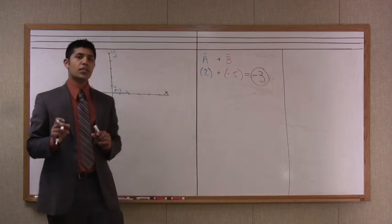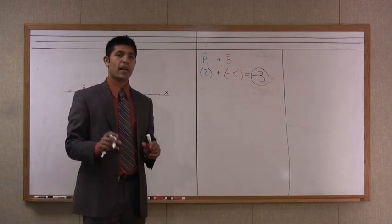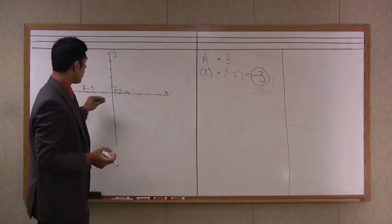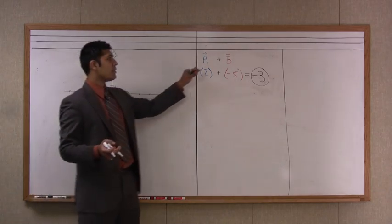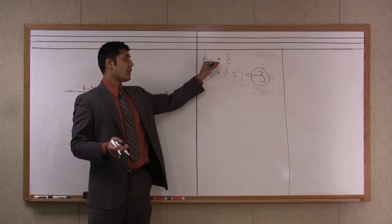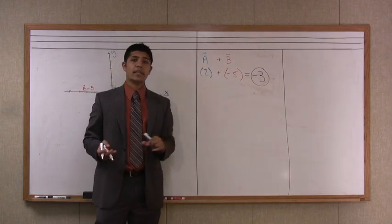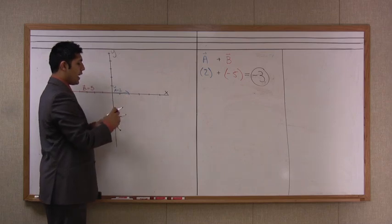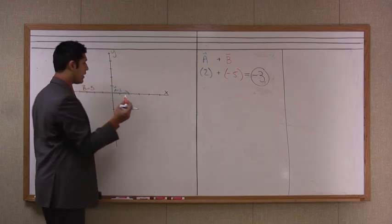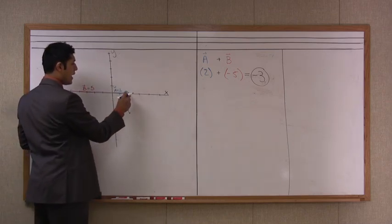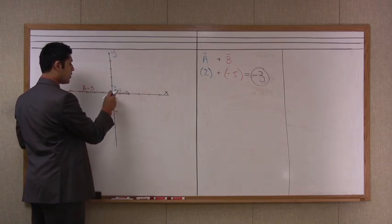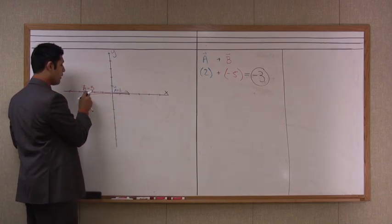However, it's good to show them the head-to-tail method as well for them to visualize it. And so the head-to-tail method says that you take vector a and then you put vector b on the end of it. So we have vector a going two units to the right and I'm going to draw a new vector b in red starting from the head of it and going backwards one, two, three, four, five units.